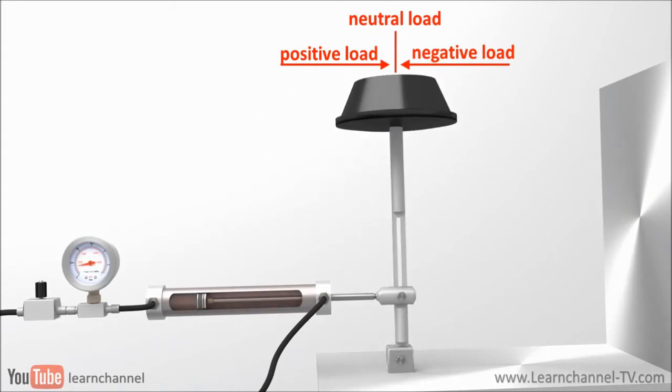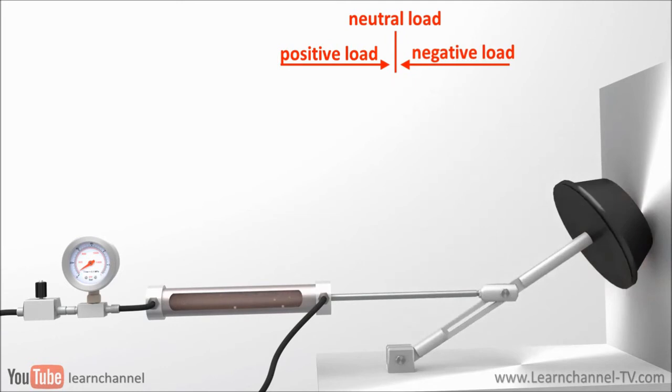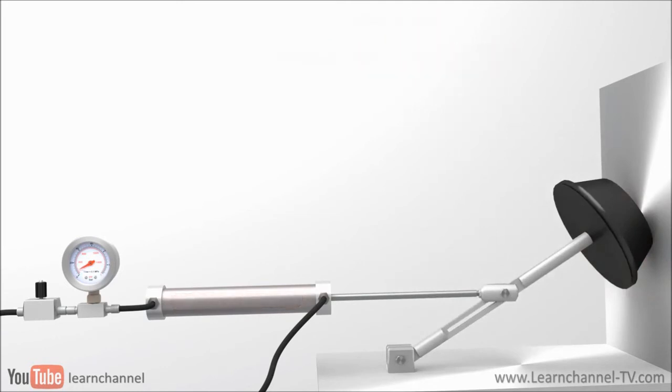The advantage of meter in is that it is very accurate to a positive load. The problem here is, when the load goes over center, the load becomes negative or overruns and can no longer be controlled by the cylinder. Besides the risk of damage, you get cavitation when the load plumps down and air is sucked in.